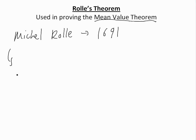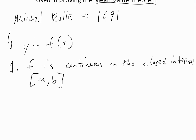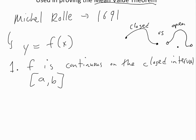Rolle's Theorem is stated as follows. If you have a function y equals f of x, then the following conditions must be true. Condition 1: f is continuous on the closed interval [a, b]. This just means that a and b are included. A closed interval includes the endpoints, whereas an open interval does not include the ones at the end.